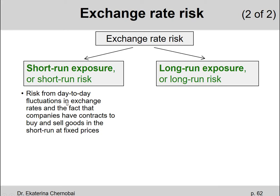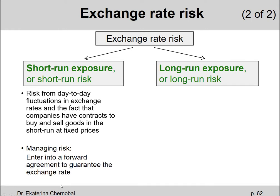How can we manage this risk? We cannot eliminate fluctuations in exchange rates in the future, but we can lower our exposure — how much we are affected by these fluctuations. One way to manage this risk is to enter into a forward agreement to guarantee the exchange rate. For example, you can lock in a certain exchange rate that will be used in six months when you're planning to receive a large income from your business, or when you're planning to spend money on some big expensive item. At least you know today what exchange rate you will use at that specific future point in time, eliminating some uncertainty about what the exchange rate will be.